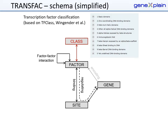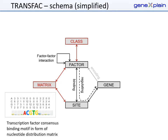The transcription factor classification from TF class has been integrated. Based on the collection of DNA binding sites for a transcription factor, consensus binding motifs in the form of nucleotide distribution matrices are derived, which can be used by the included tools for binding site prediction in regulatory DNA sequences.